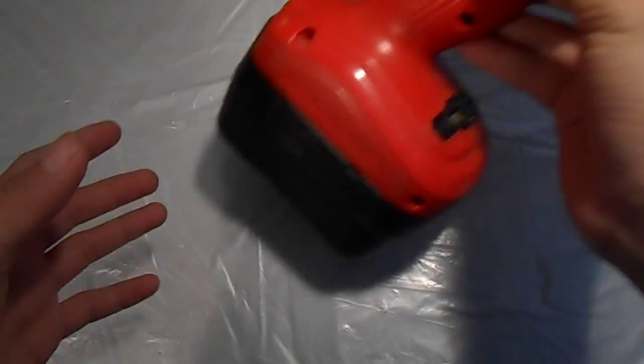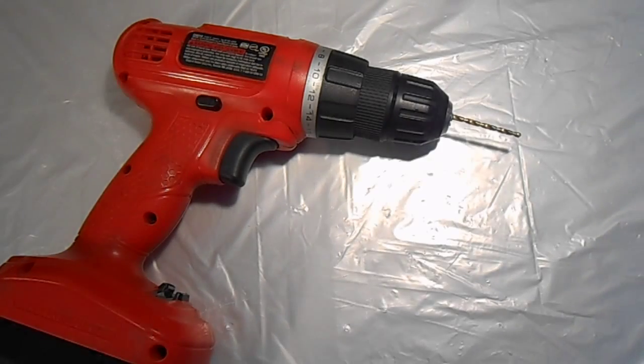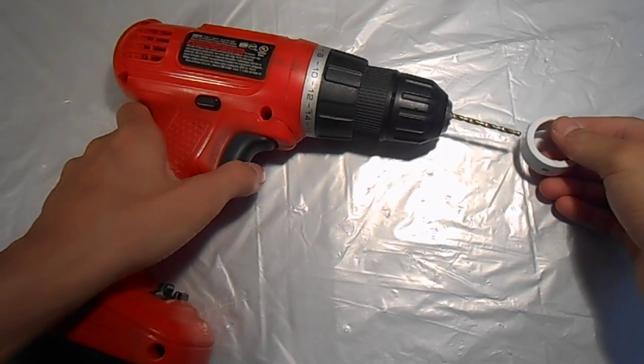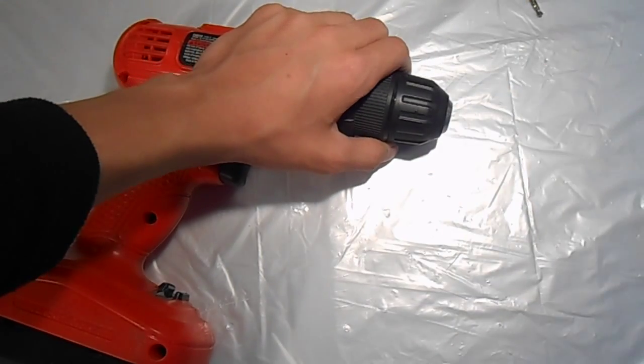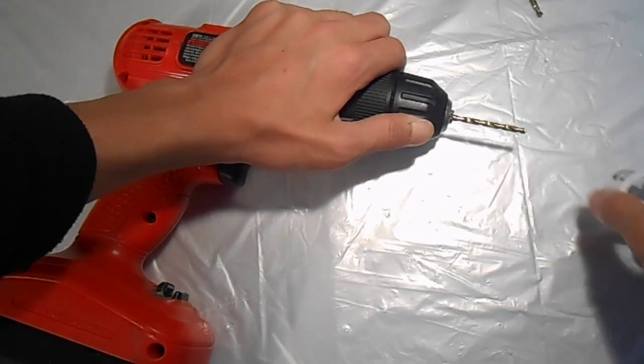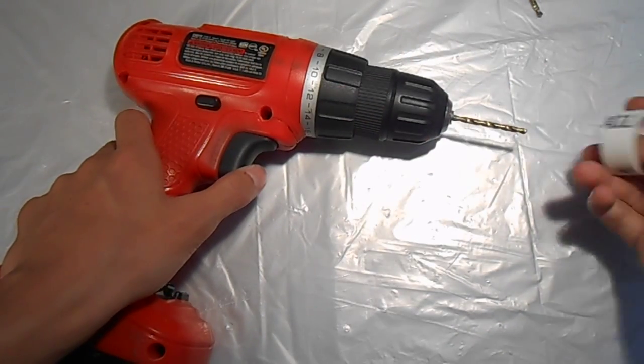Step number eight. Take your drill with the smaller drill bit, the 9/64 inch drill bit, and your one-inch PVC pipe, and drill two holes. They have to be across from each other. Now take your bigger one, the 1/8 inch one, I believe, and drill on the other marks that you didn't drill yet.